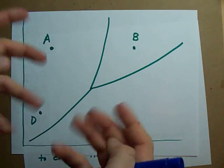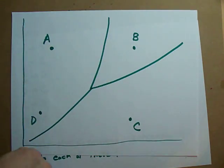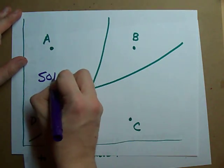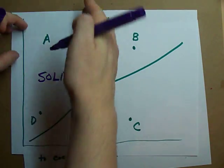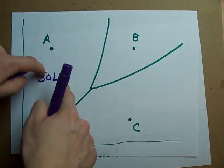When you're given a phase diagram like this one, solid is always to the left. This is the solid area. Everything in this area, these temperature pressure combinations is a solid.